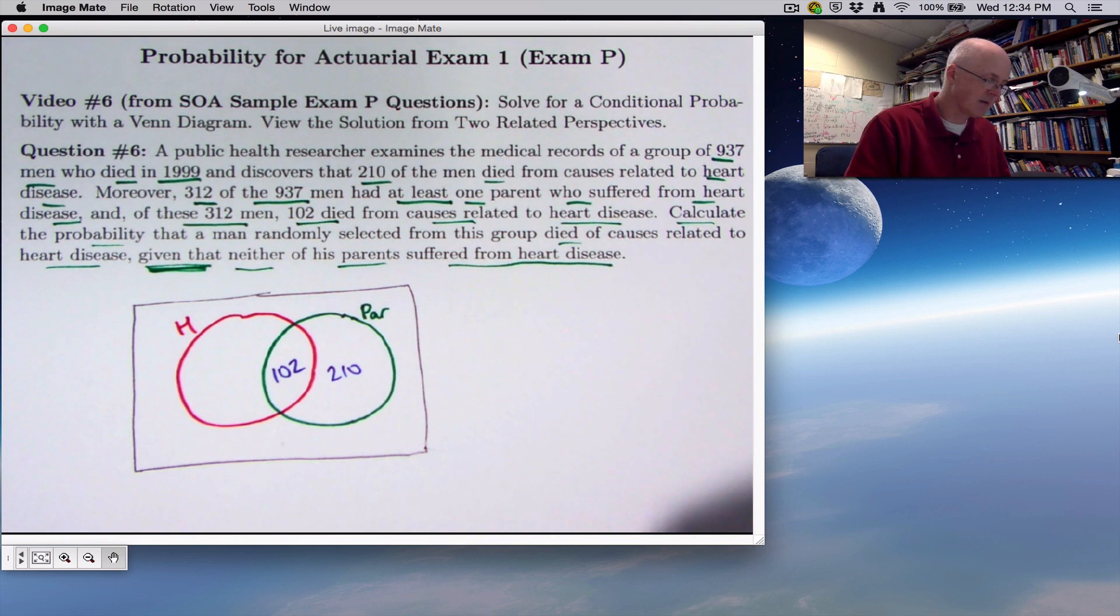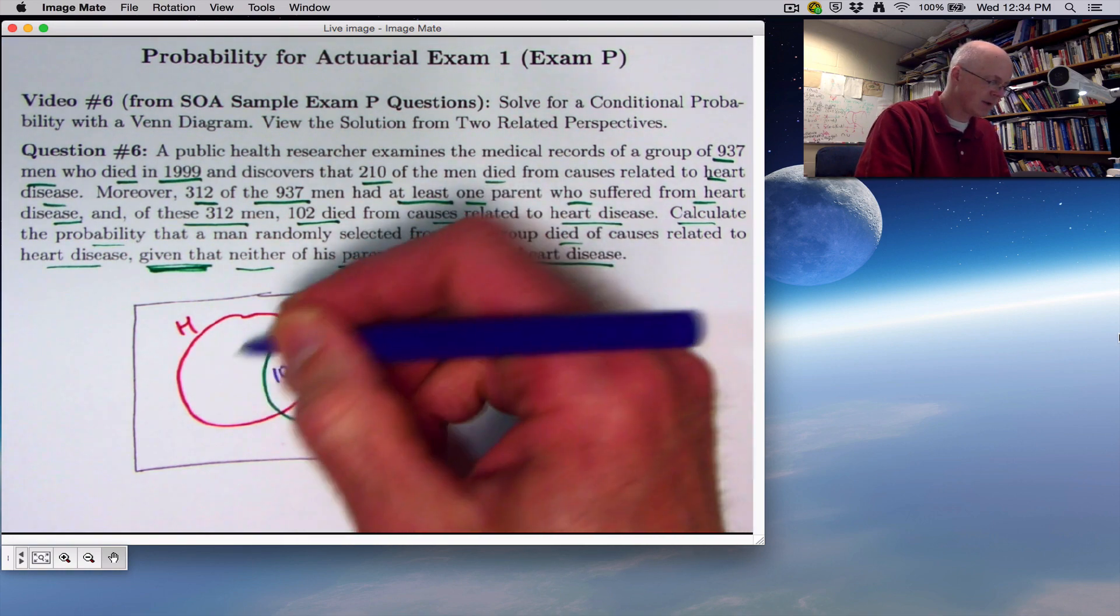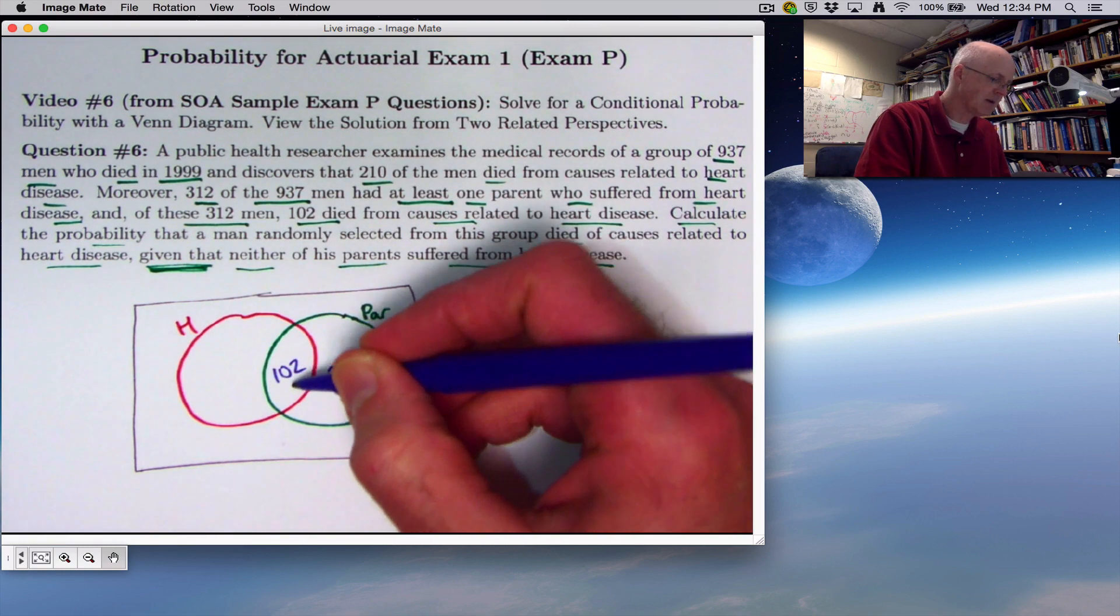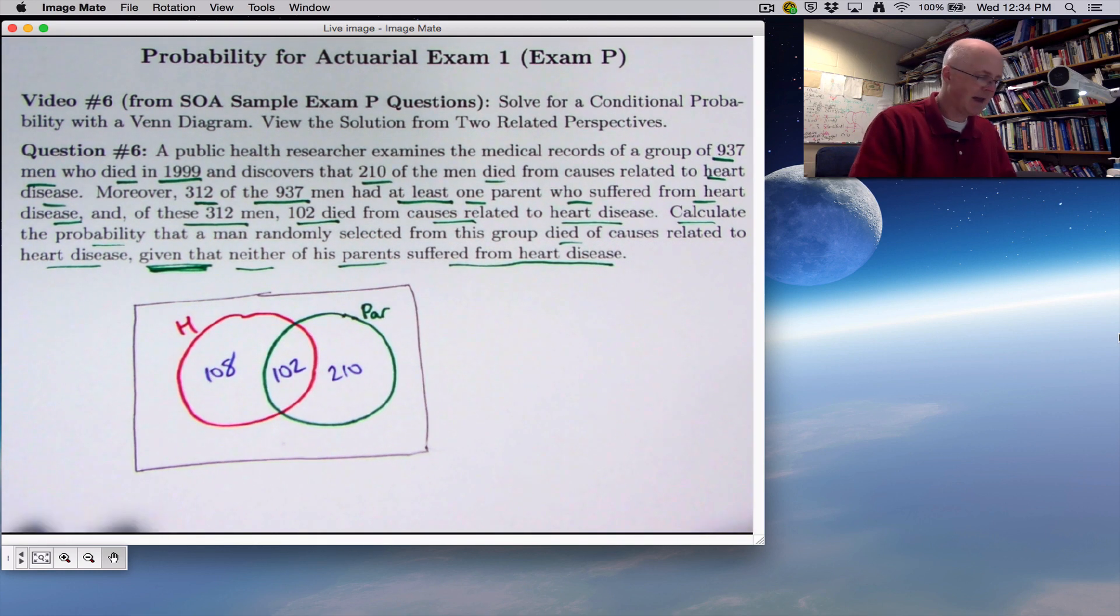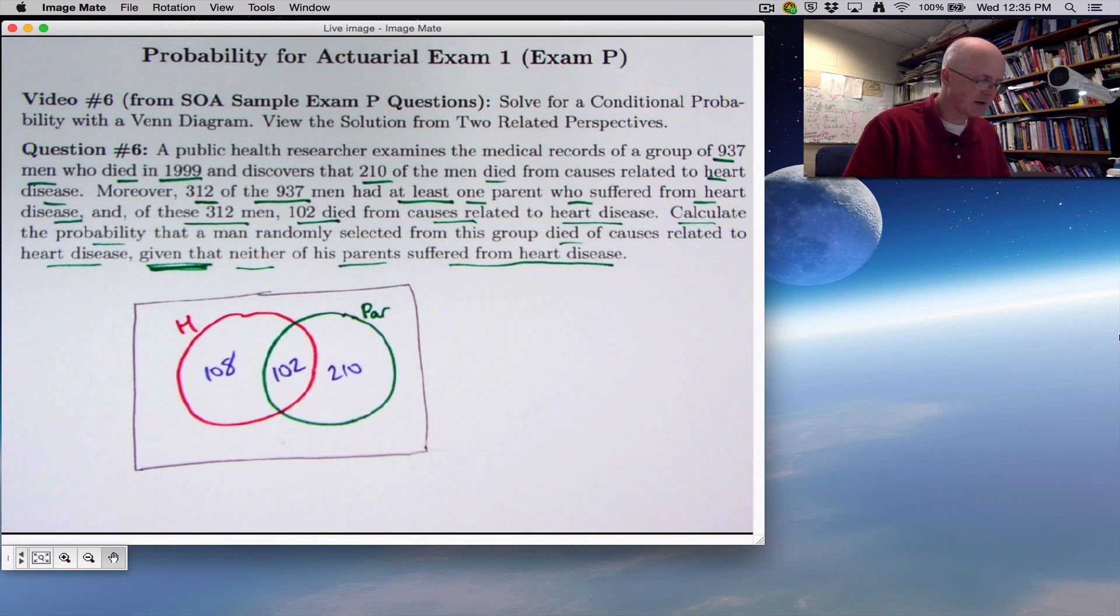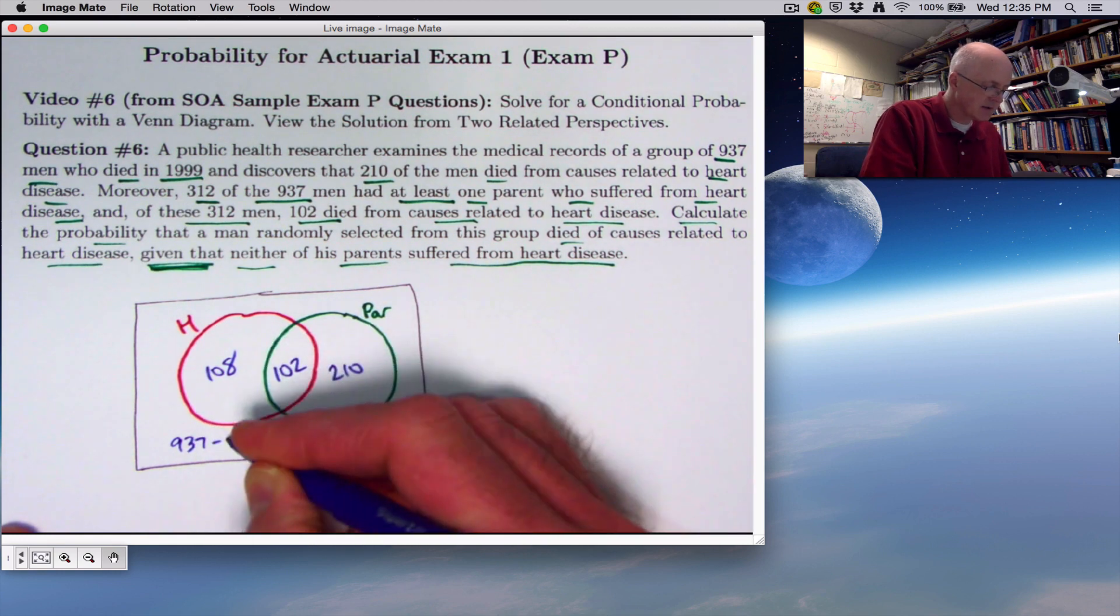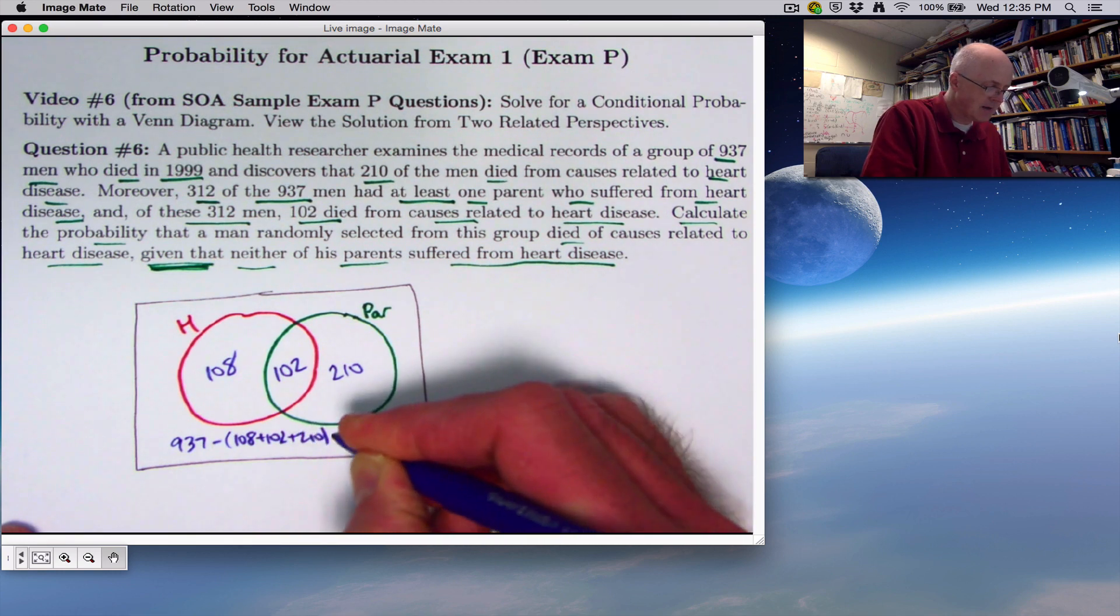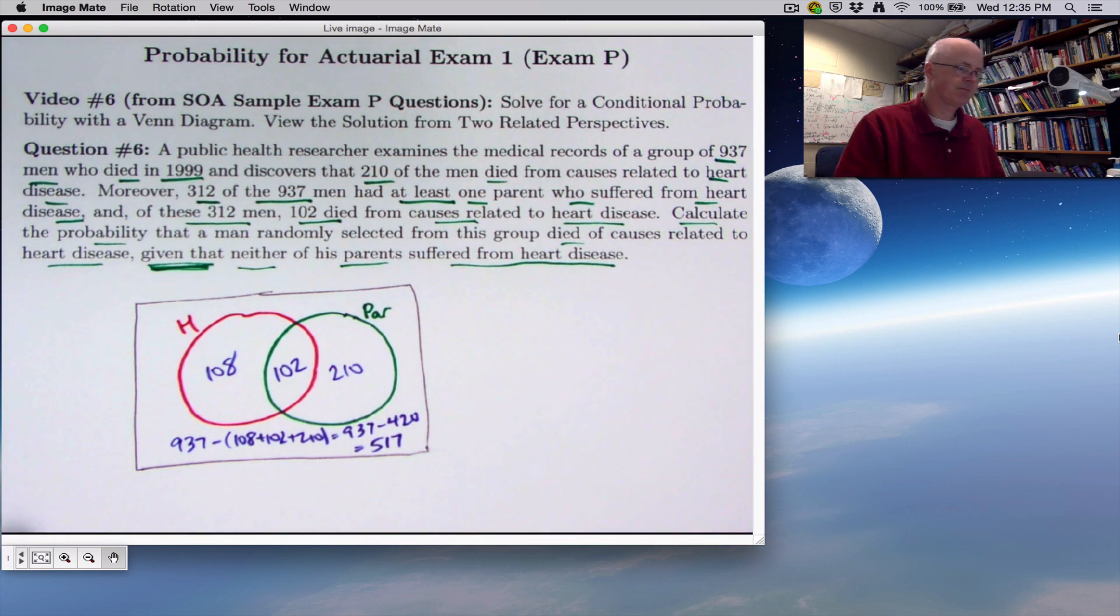And then for this crescent, you've got 210 men total in the red circle, 102 in here. So over here you'd have 210 minus 102, that would be 108. And then outside of both circles, you'd have 937 minus the sum of these three things: minus 108 plus 102 plus 210, 937 minus 420, which is 517.